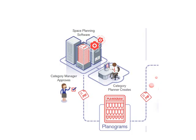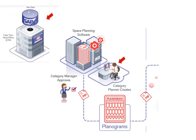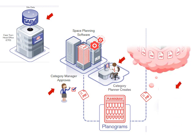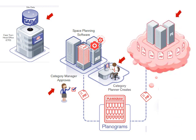A site-specific planogram is created for each specific merchandise category, where the category planner takes into account site-specific data including site sales and site demographics. Upon approval of each planogram by the category manager, the status of the planogram is set to created, ready for download, and the planograms are published on the planogram system so that the dealers, CMAs, and area managers can access them.